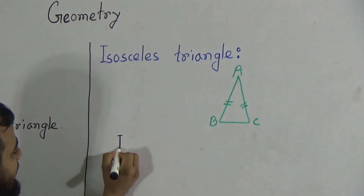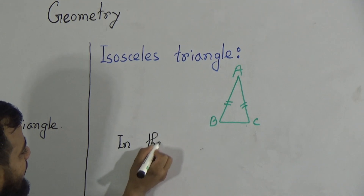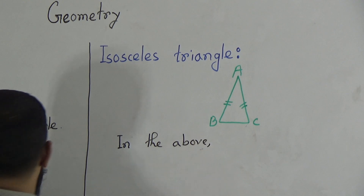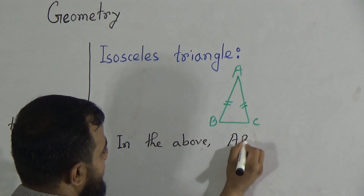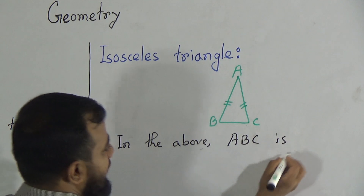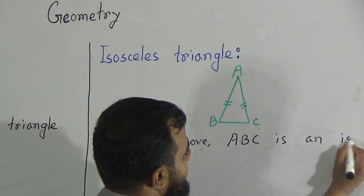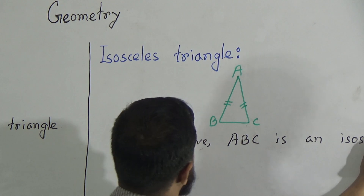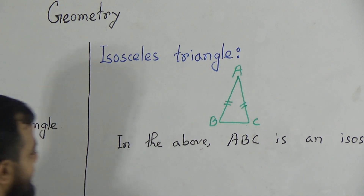In the above figure, A, B, C is an isosceles triangle.